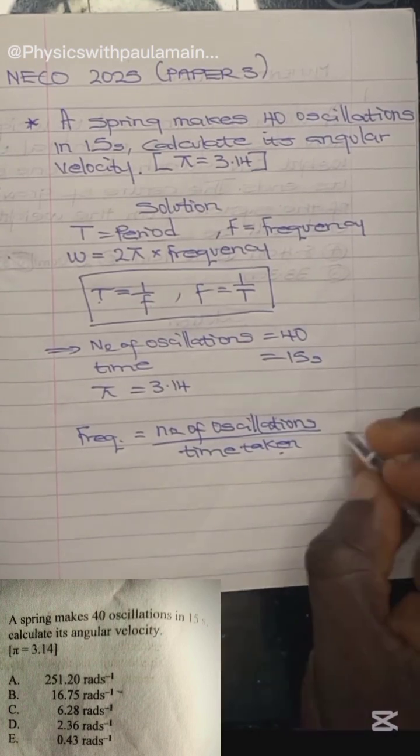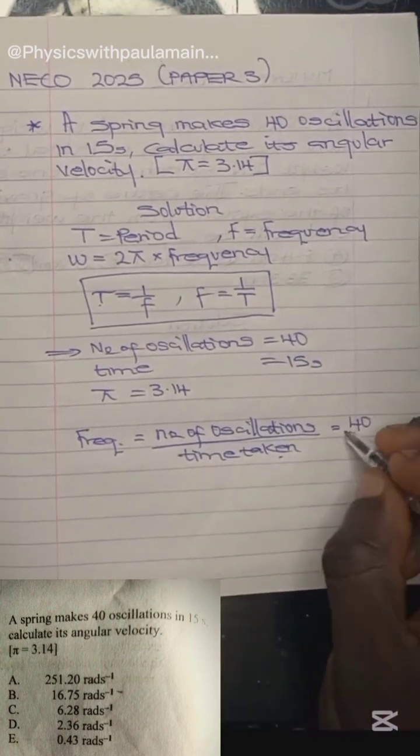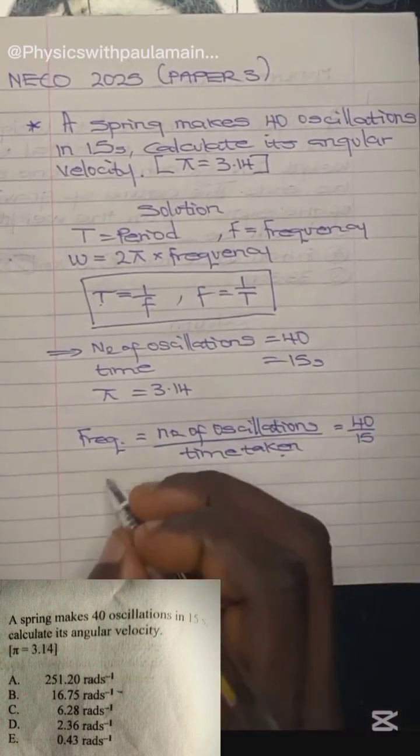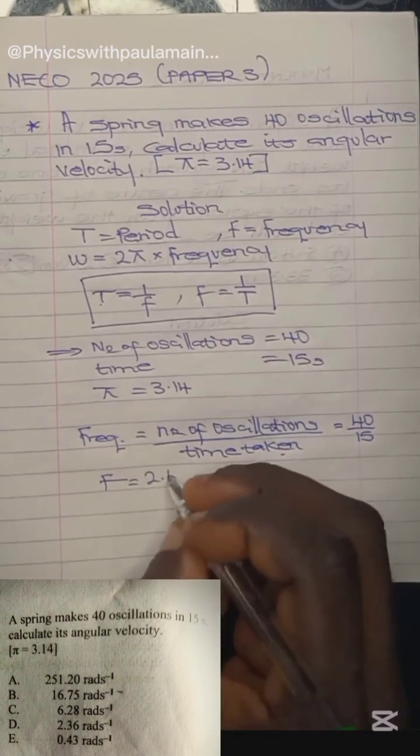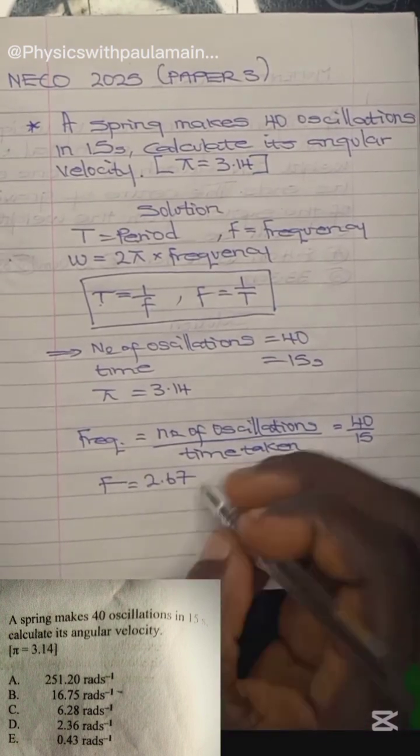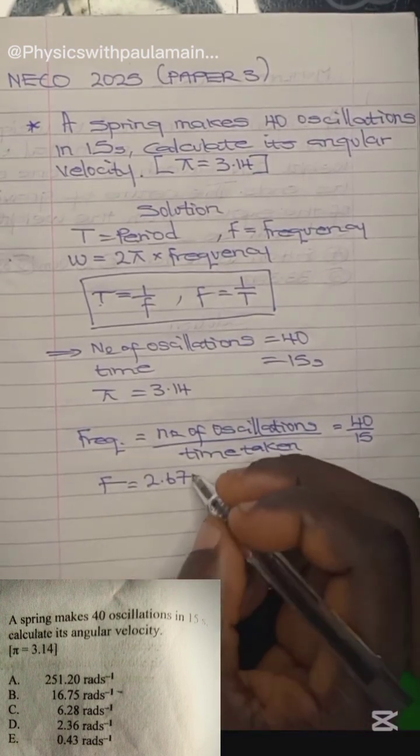So the frequency in this case will be 40 over 15. If I do 40 divided by 15, the frequency equals 2.67. The frequency is written in the unit of hertz.